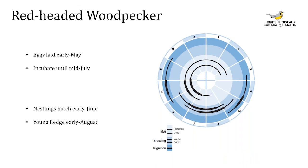Red-headed woodpeckers begin laying eggs in early May and continue incubating until mid-August in the southern portions of the range; however in Ontario they're usually finished incubating by mid-July. The young begin to hatch in early June and will have fledged the nest by early August.